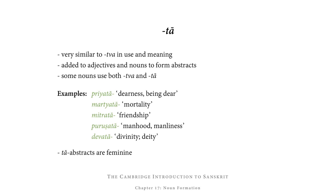-Tā is a suffix very similar to -tva in both its use and meaning. It is added to either adjectives or nouns and also forms abstracts. There are several nouns and adjectives that use both -tva and -tā with very little distinction in meaning. For example, on the basis of priya, meaning dear, we get priyatā, dearness or being dear. Martyatā would be the state of being martya, i.e. mortal, and therefore mortality. Mitratā — state of being mitra, being friends, friendship. Puruṣatā — state of being a puruṣa, manhood or manliness.